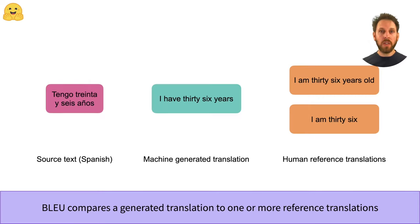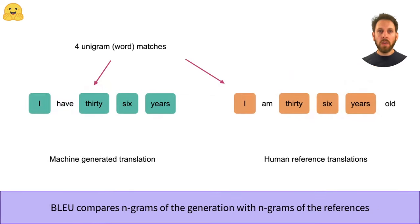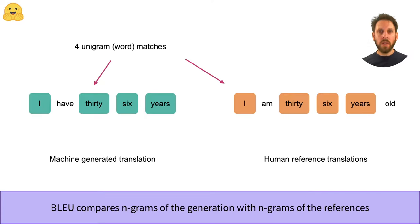So how can we measure the quality of a generated translation in some automatic way? The approach that BLEU takes is to compare the n-grams of the generated translation to the n-grams of the references. An n-gram is just a fancy way of saying a chunk of n words. So let's start with unigrams, which corresponds to the individual words in a sentence.